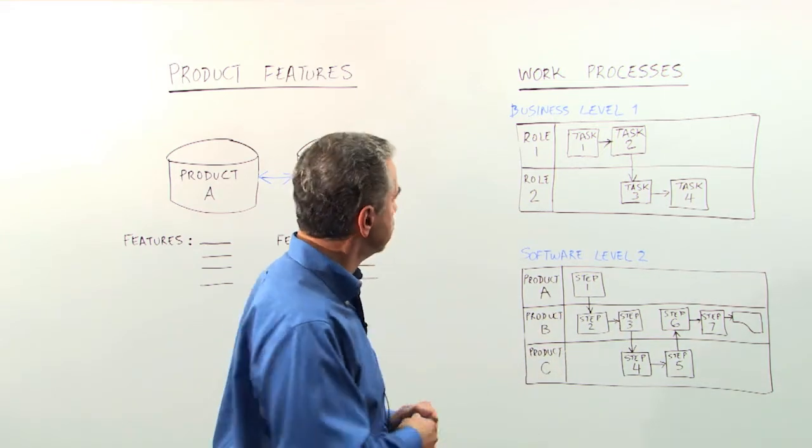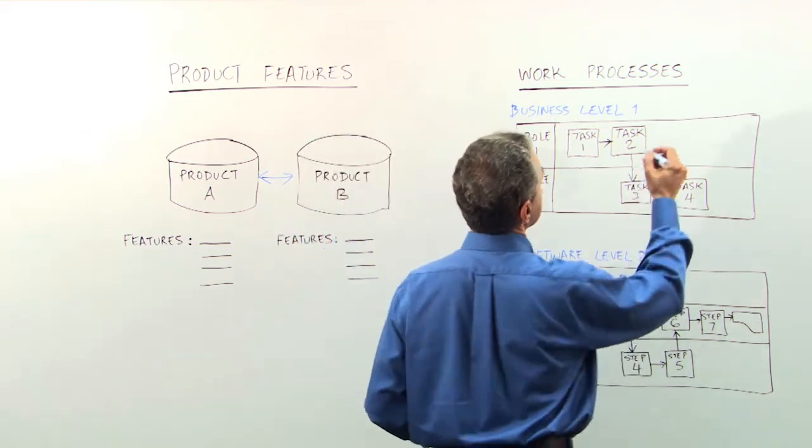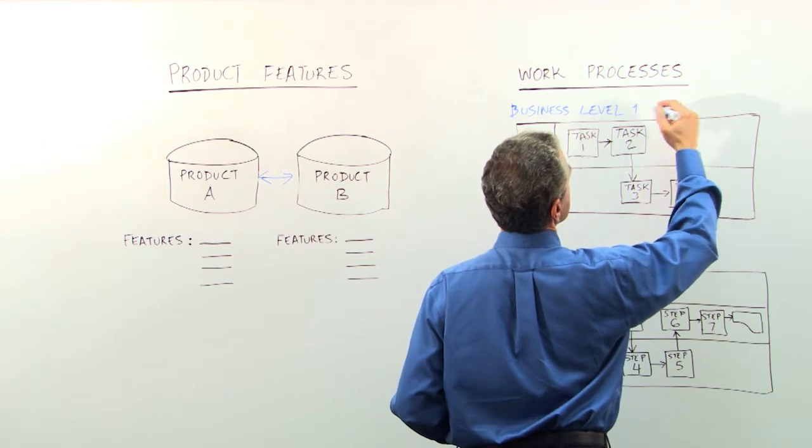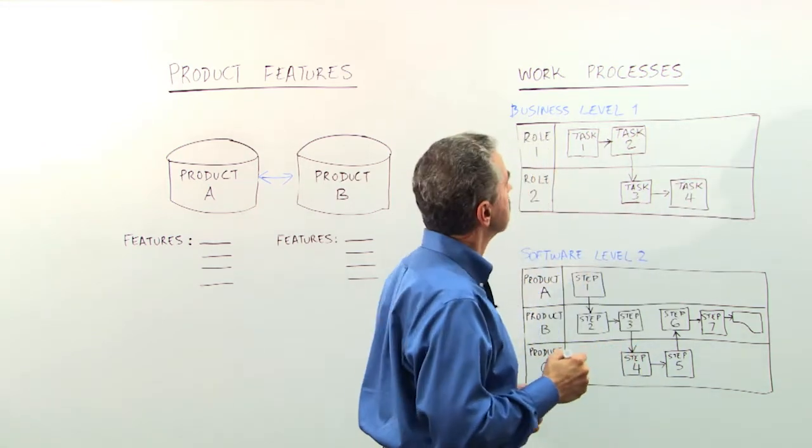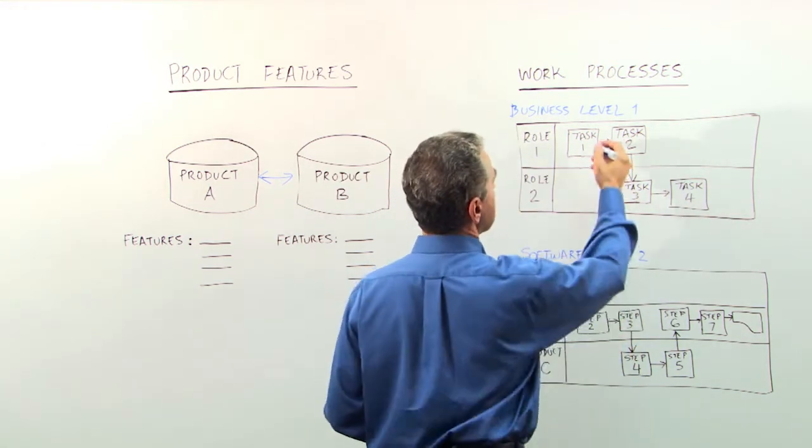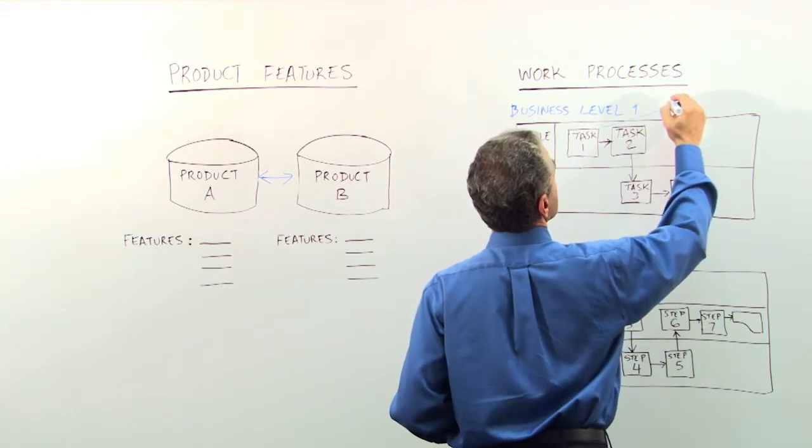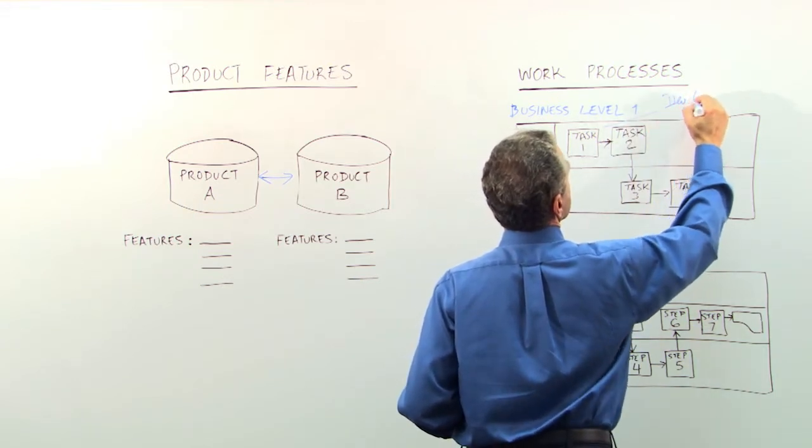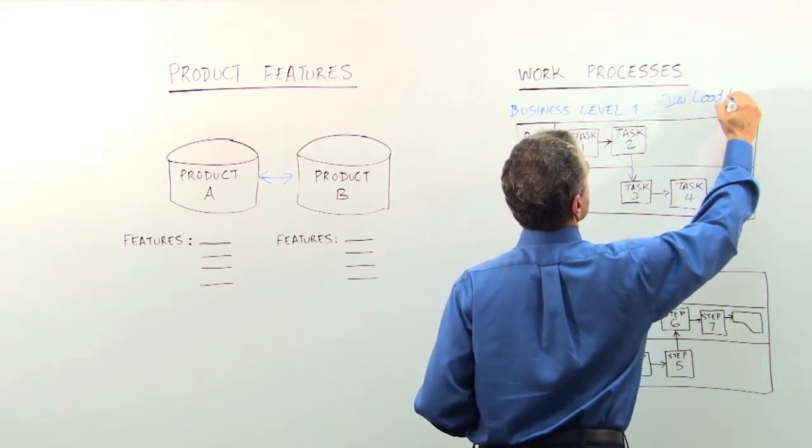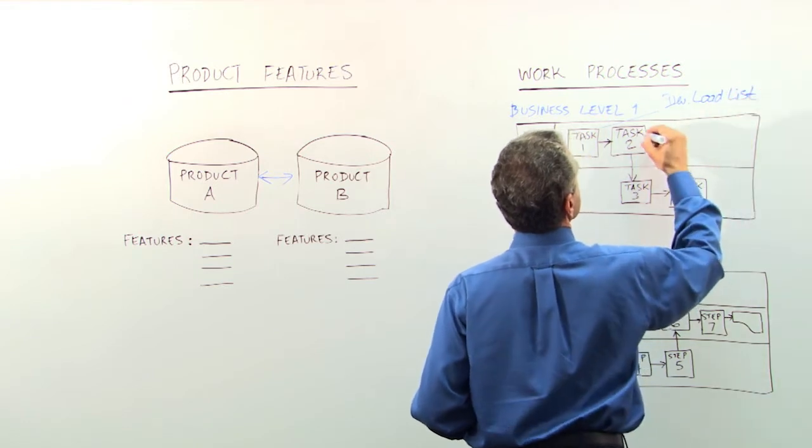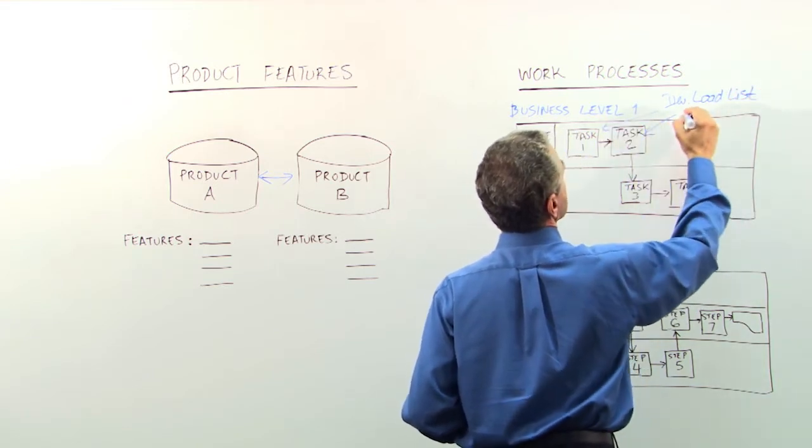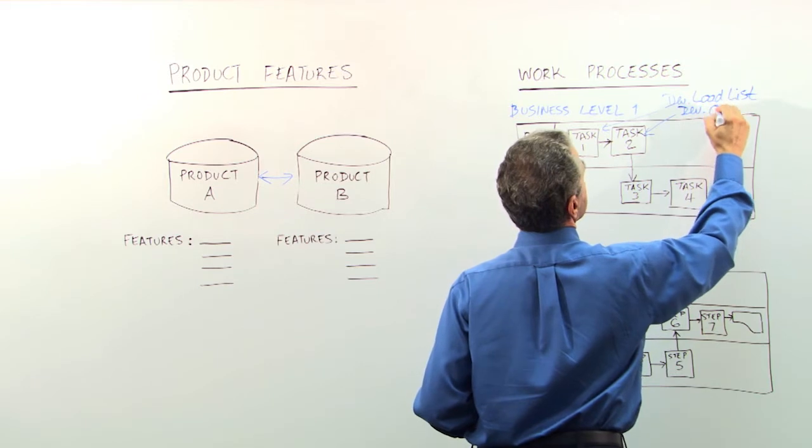So let's take an example. Let's take a look at an electrical engineer designing a plant. So some of the tasks early on may be develop an electrical load list. And then after that, you need to develop one-line diagrams.